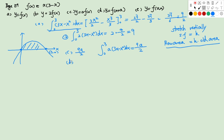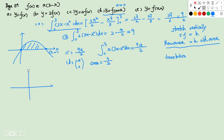For part d, y = f(x + a). This is a horizontal translation with translation vector (−a, 0). Assuming a > 0, the graph is shifted to the left and nothing else changes. So we guess the area will still be the same, 9/2. The point (0, 0) moves to (−a, 0) and (3, 0) moves to (3 − a, 0).